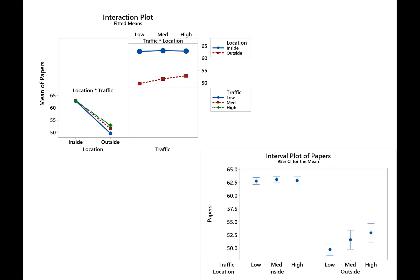We come back to the interval plot we saw earlier — it's so related to the top right interaction graph. The blue line on the interaction plot for inside locations is right there, and the dashed line for outside locations is right down here. One limitation is that interaction plots don't show confidence intervals, but you can make the same kind of plot using an interval plot if you want those confidence intervals.